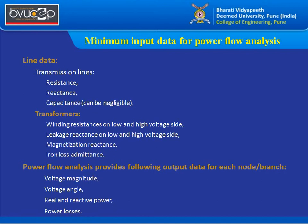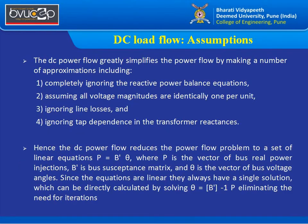For transformers, the required parameters are: winding resistance on LV and HV sides, leakage reactance on LV and HV sides, magnetization reactance, and iron loss admittance. Other transformer parameters such as tap-changing positions, operating temperature, and operating voltage may or may not be required for load flow analysis. The output parameters at each bus include voltage magnitude, voltage angle, real and reactive power, and power losses.